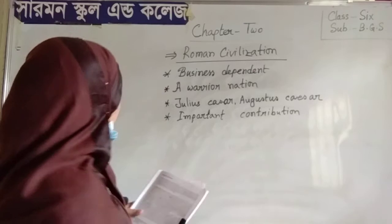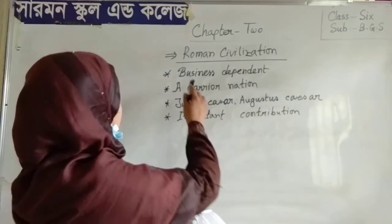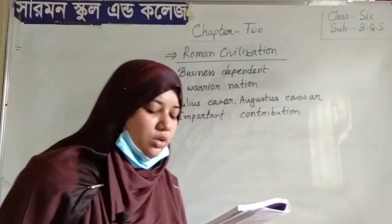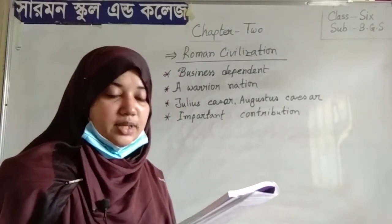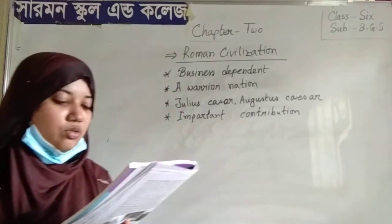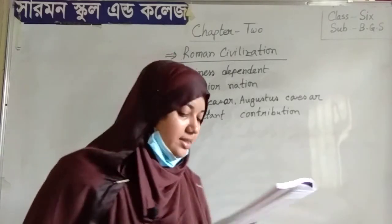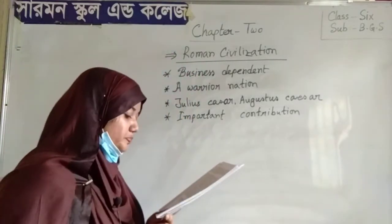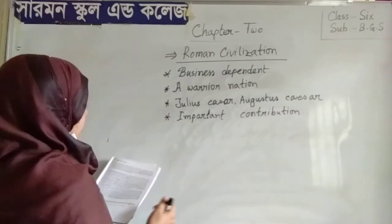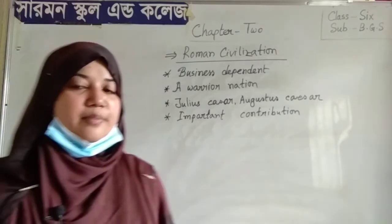We are moving to the next civilization — Roman civilization. This civilization was business-dependent. Though there was little cultivation, this civilization was business-dependent and the Romans were a warrior nation. They built a vast empire by conquering many countries. Renowned emperors like Julius Caesar and Augustus Caesar developed the empire of Rome.